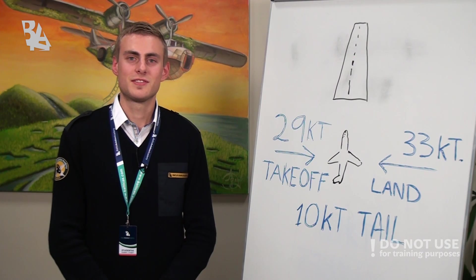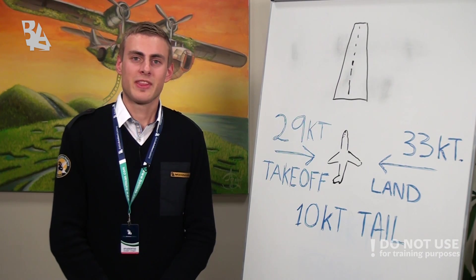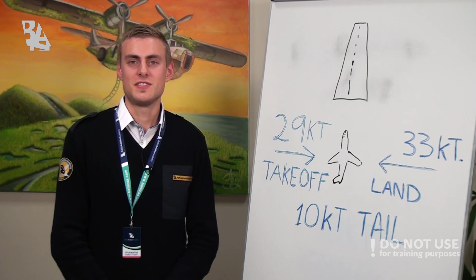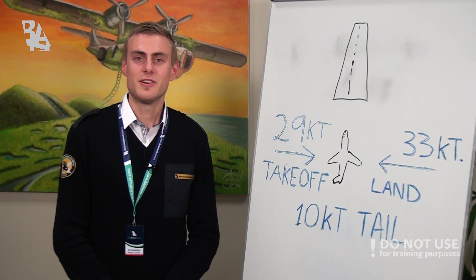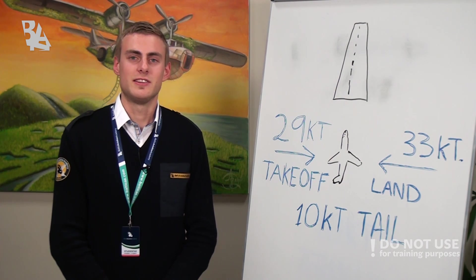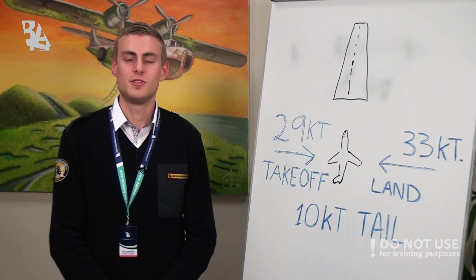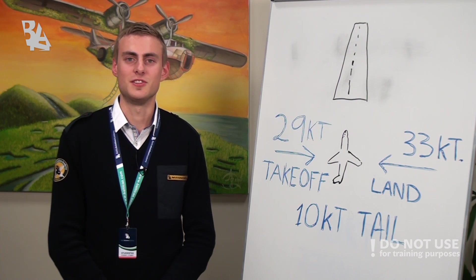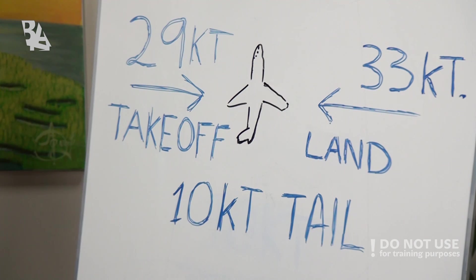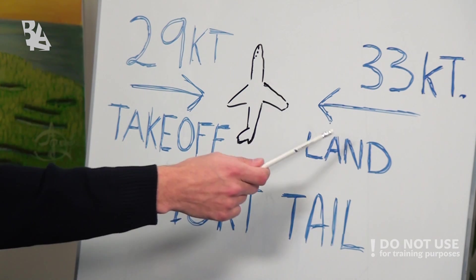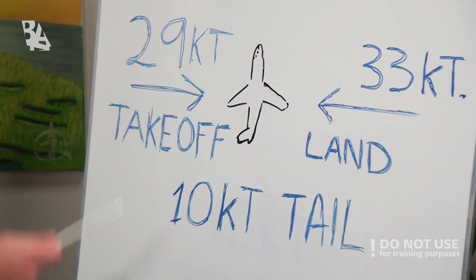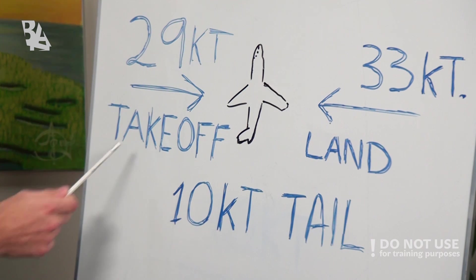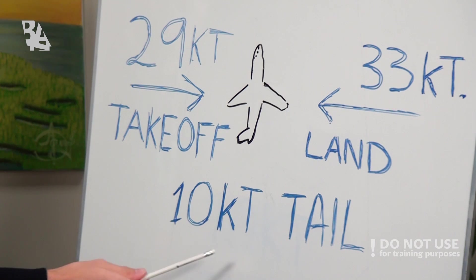A 100-knot crosswind is not possible of course, but it would be fun to try in a simulator, because in a 100-knot crosswind the nose of the aircraft would point too much into the wind for a landing to be made. The Airbus A320 has a maximum crosswind component of 33 knots on landing and 29 knots on takeoff, and 10 knots tailwind. Gusts up to 38 knots have been demonstrated.